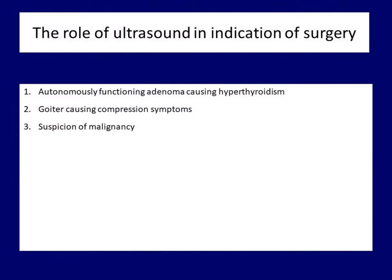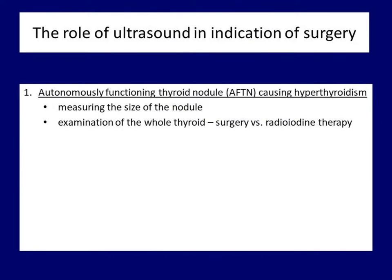We now turn to the role of ultrasound in determining which nodule to operate on. There are three distinct reasons for thyroid surgery. There is a fourth reason — the wish of the patient — but strictly speaking this cannot be considered a professional reason. The first is an autonomously functioning adenoma which causes hyperthyroidism. In this regard, the role of ultrasound is mainly the measurement of the nodule. Another important task is to examine the whole thyroid to decide whether surgery or radioiodine therapy would be the appropriate definitive treatment.